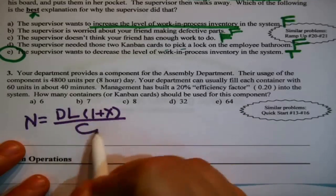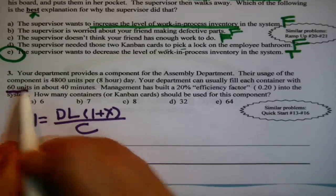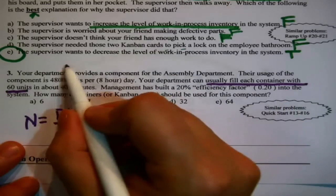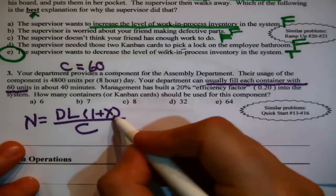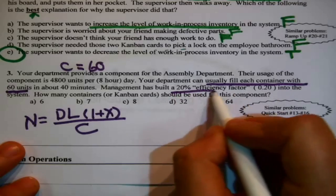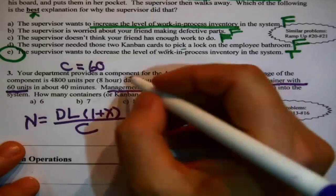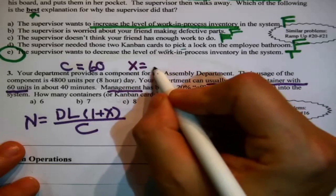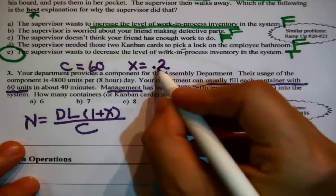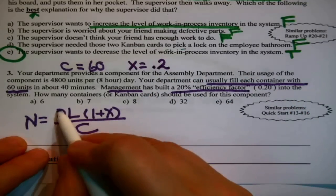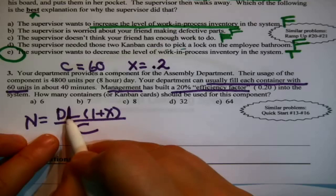The number of Kanban cards equals D times L times one plus X, divided by C. C — container size — is pretty obvious: fills each container with 60 units, so C equals 60. The mysterious X is the efficiency factor that management imposes from the outside, which is 20%, so X equals 0.2. D is the demand or usage of the item being controlled, and L is the lead time — the total turnaround time to fill a box, which is about 40 minutes.